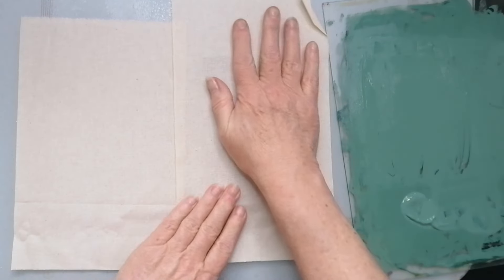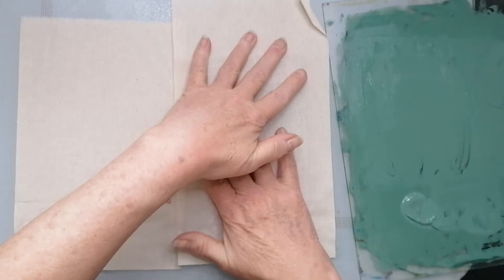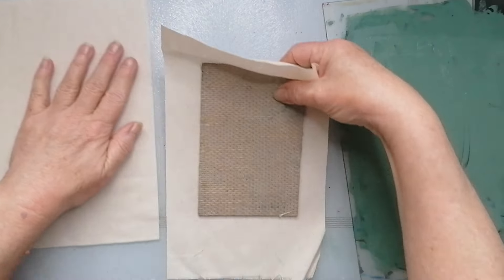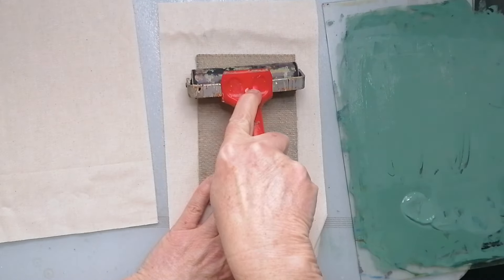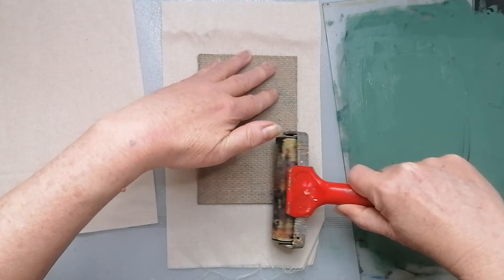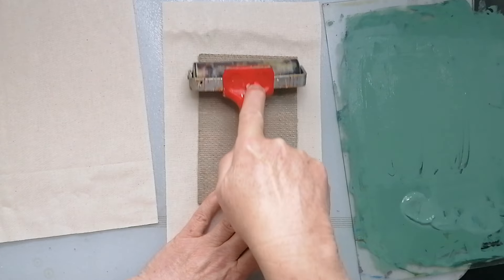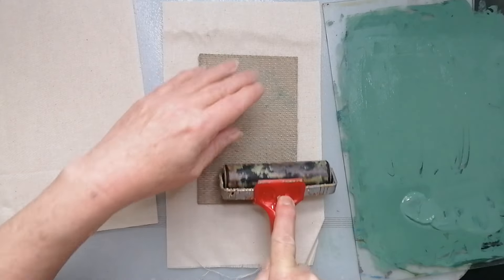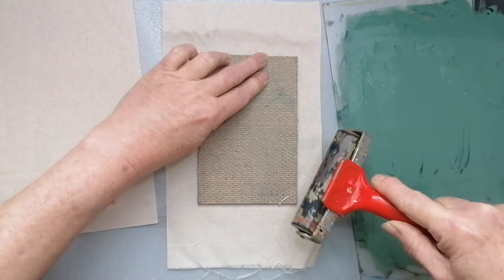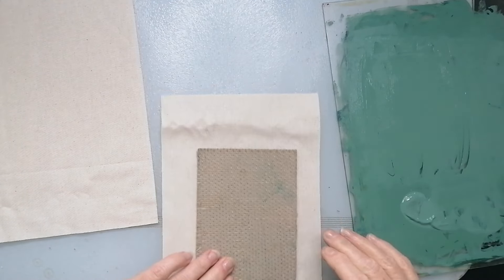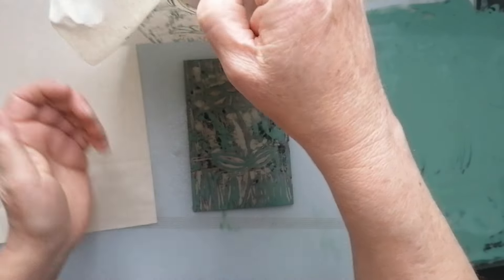So just smooth it out. Got some nice green fingers going on here, which is lovely. I'll give it a flip. I don't know if this is the right way to do it. This is the way I do it. And then, that's your print.